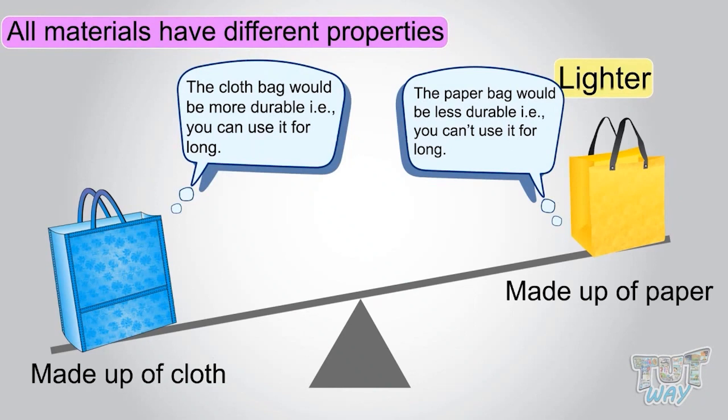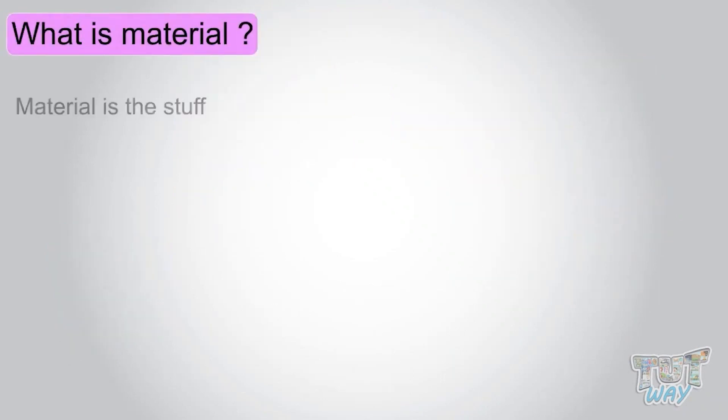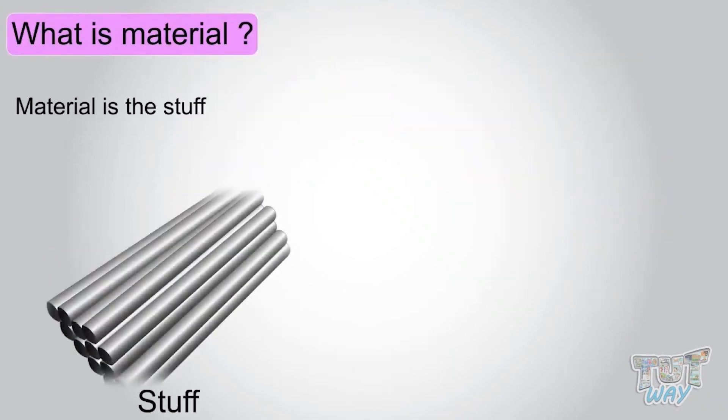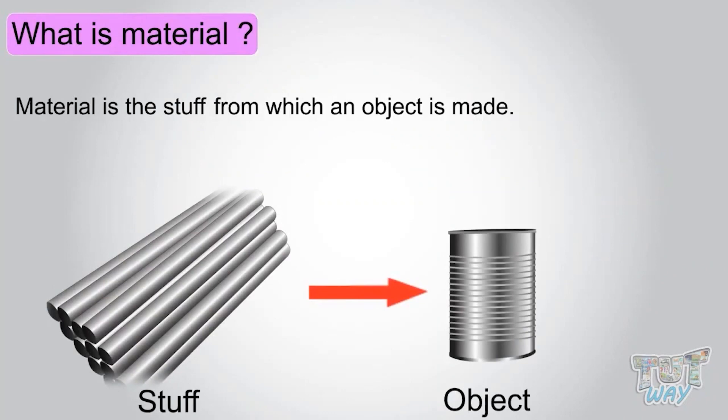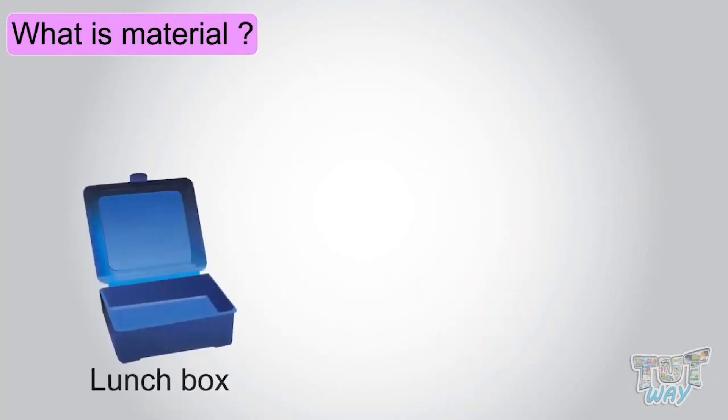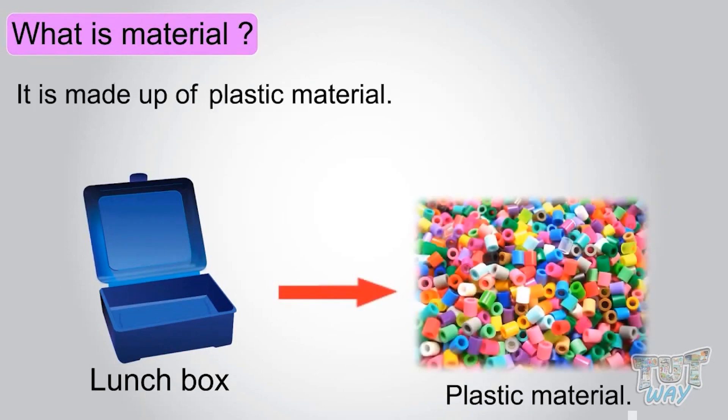So different objects can be made of different materials, and different materials have different properties. What is material? Material is the stuff from which an object is made. Like what is the material of this lunch box? It is made up of plastic material.